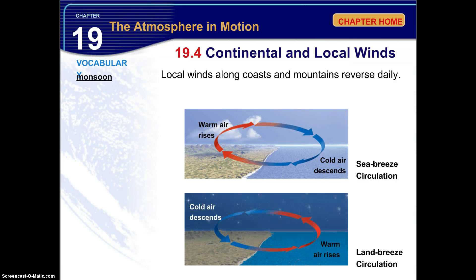The land breeze is reversed and typically happens at night. This is where the land cools off faster and becomes colder than the water. Therefore, the air above the land is cold — it descends, moves from high to low pressure, goes out into the ocean, heats up, rises, and circulates in that continuous pattern until the sun heats up the land and it reverses back to a sea breeze. So: sea breeze circulation — the surface wind goes towards the coast; land breeze — the surface wind moves away from the coast. If you're ever on the beach and the sun sets, you'll sometimes notice a change in wind direction.